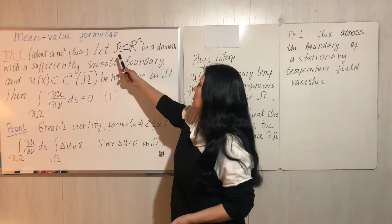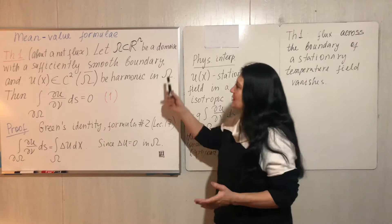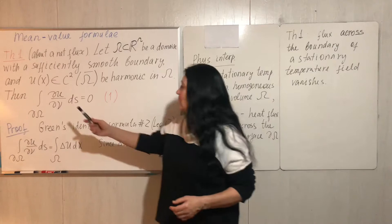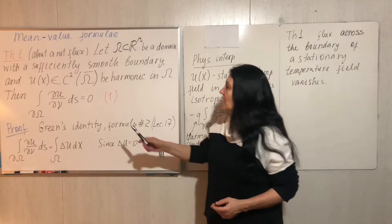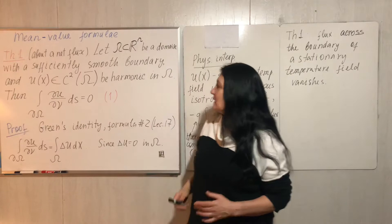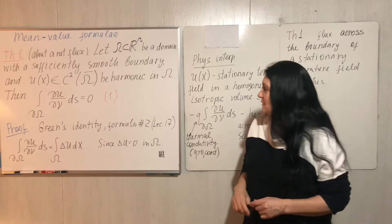Suppose we have domain omega as usual in some n-dimensional space R^n, and the domain has a sufficiently smooth boundary. We will be talking about function u of x, an n-dimensional vector, where u is a C² function in the closure of our domain, and u is harmonic.